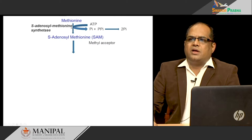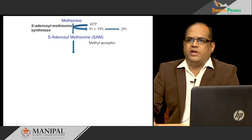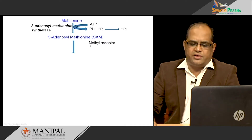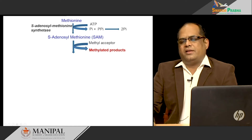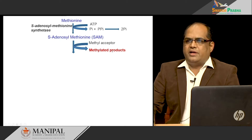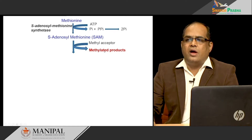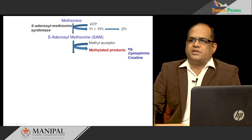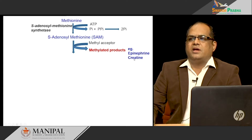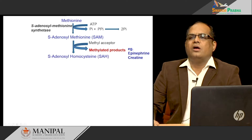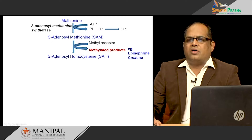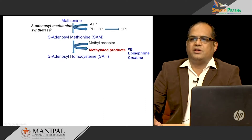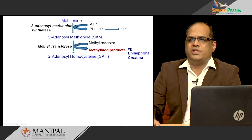In the next reaction, the methyl group carried by S-adenosyl methionine is donated to various methyl acceptors, which are converted into methylated products. For example, during the synthesis of epinephrine the methyl group is donated, and creatine also requires this methyl group for its synthesis. After removal of the methyl group, S-adenosyl homocysteine is formed — this is methionine without the methyl group but still carrying the adenosyl group.